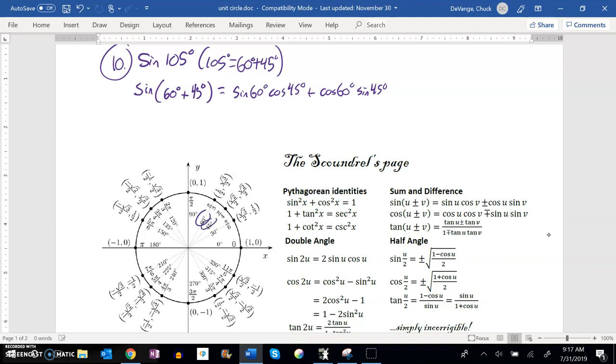And then these values, I either know or I can look them up. Sine of 60 is root 3 over 2, cosine of 45 is root 2 over 2, cosine of 60 is 1 half, and sine of 45 is root 2 over 2.